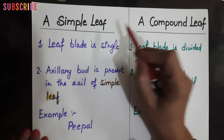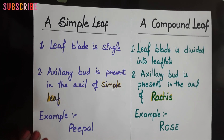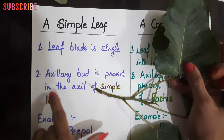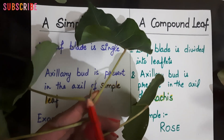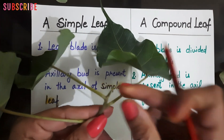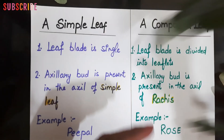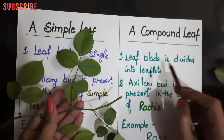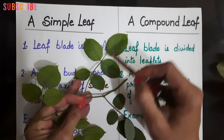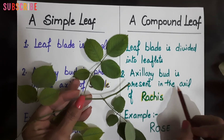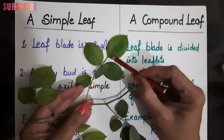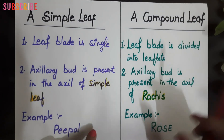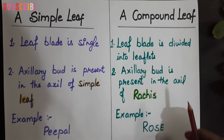To summarize: a simple leaf has a single leaf blade, and an axillary bud is present in the axil of the simple leaf, from where the next leaf or branch arises. An example is the peepal. In a compound leaf, the leaf blade is divided into leaflets, and the axillary bud is present in the axil of the rachis. This is the basic difference between a simple and compound leaf.